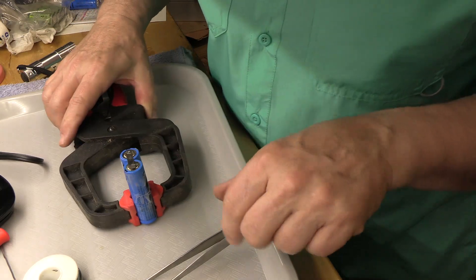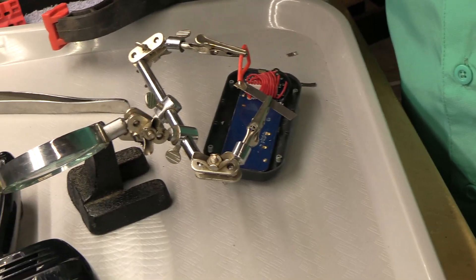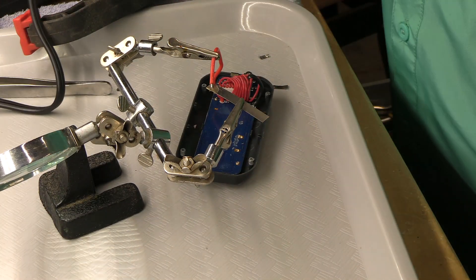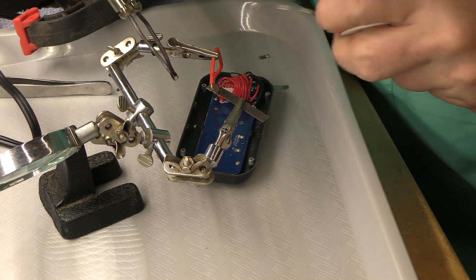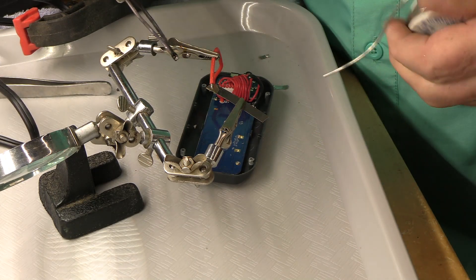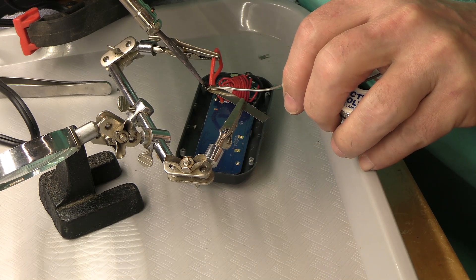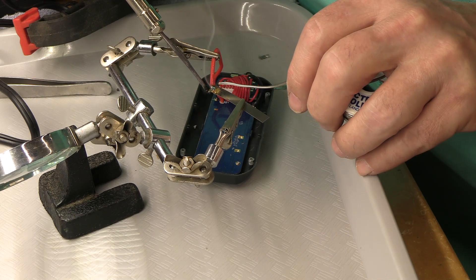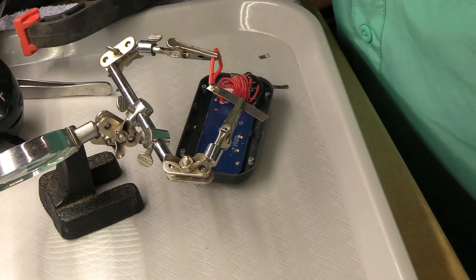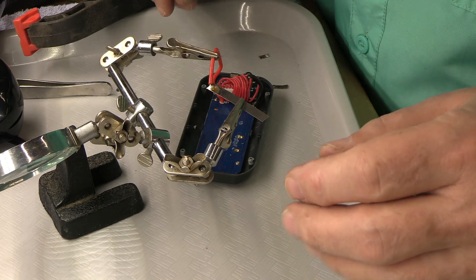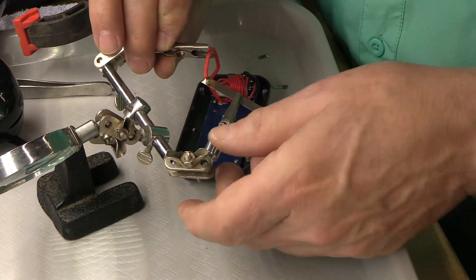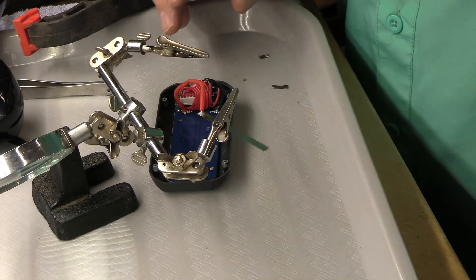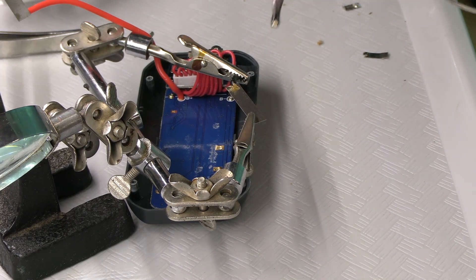We have a battery pack. All right, so we'll use some helping hands here to hold everything in position. I put some flux on this already and we'll just put a little solder on it. And then we'll do that also for the negative wire.